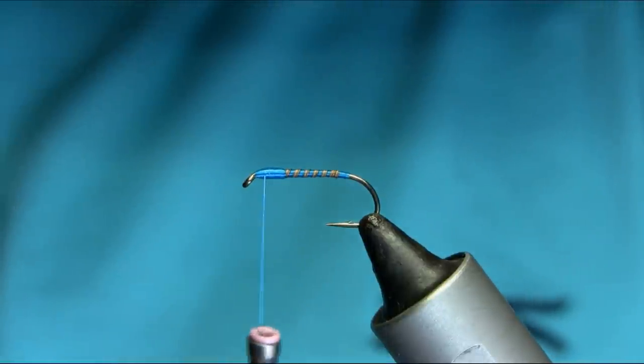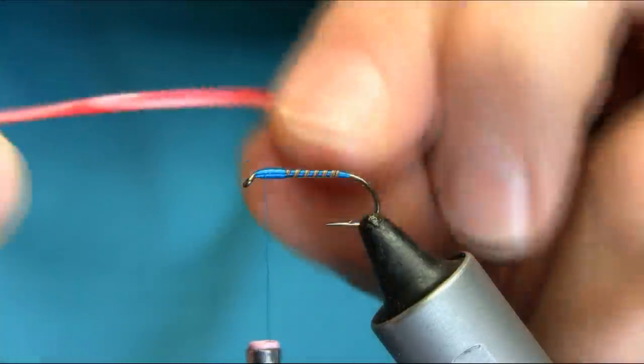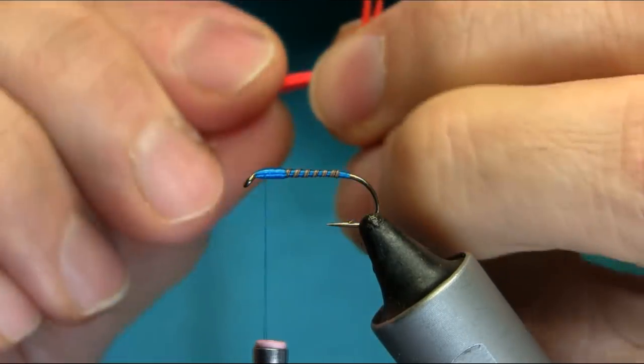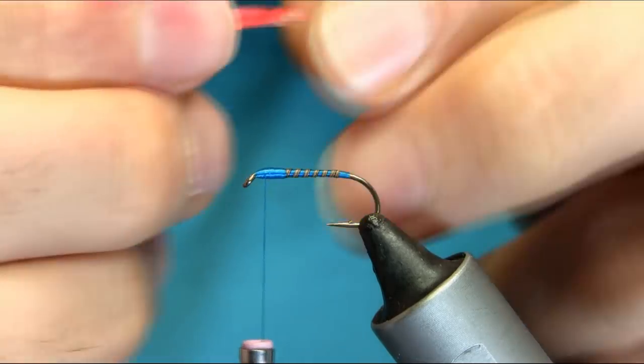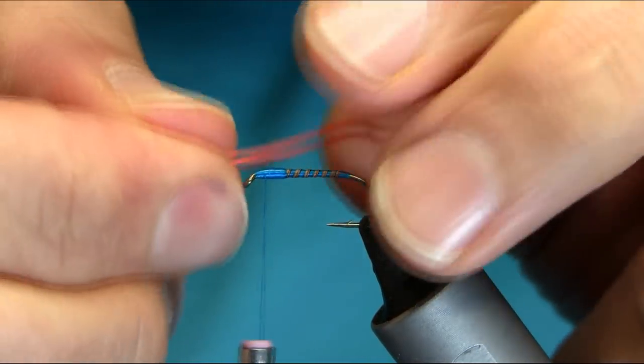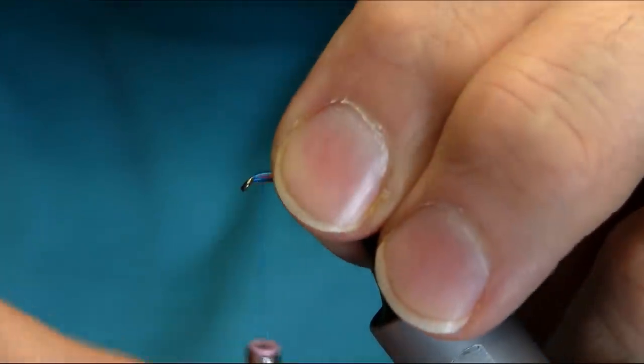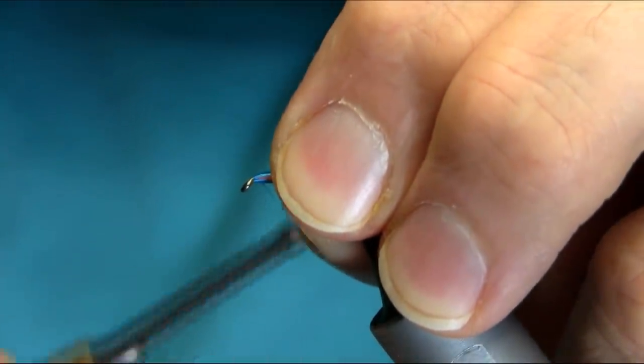And I'm going to build up a nice head here, and I'm going to add the cheeks which is a fire orange. So if you can take two, put them on either side, thin end, and take your time.